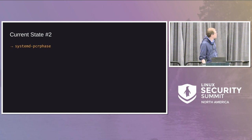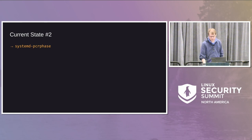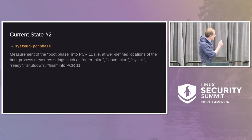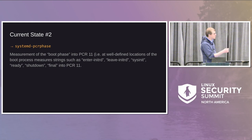The next component is systemd-pcrphase. This is about measurement, not unlocking — it's about getting the PCRs in the right state. It's invoked at selected places of the boot process and measures certain words into PCR 11. For example, when systemd first takes over from the kernel it measures the word 'enter-initrd', then when done with initrd it measures 'leave-initrd', and so on until 'system-ready' when boot is finished.